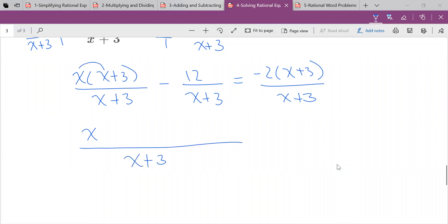just cause you know, it gets a bit frustrating, but try not to just distribute everything out. So X squared plus 3X minus 12 is equal to negative 2X plus 3 over X plus 3.